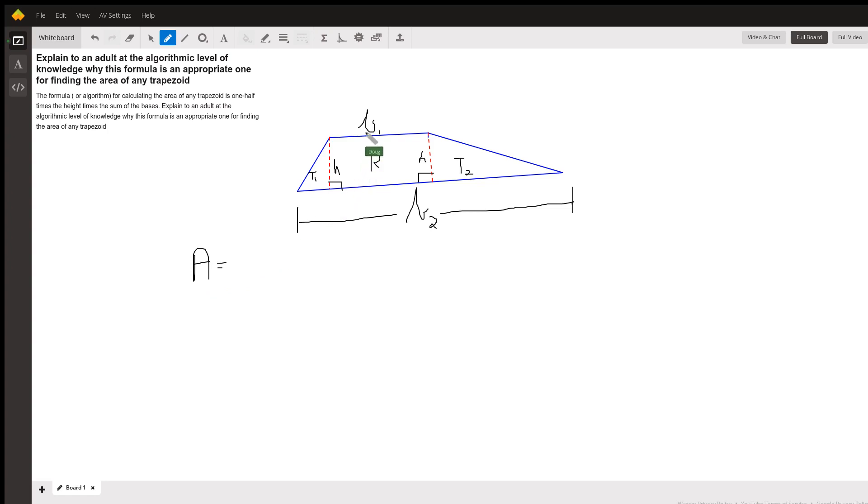Well, the area of the rectangle is length times width, so that's going to be B sub 1 times H.